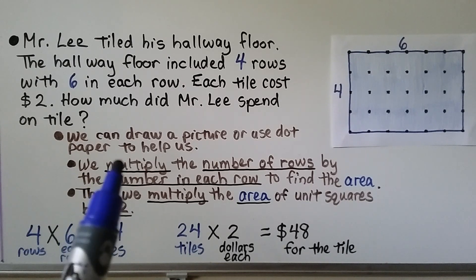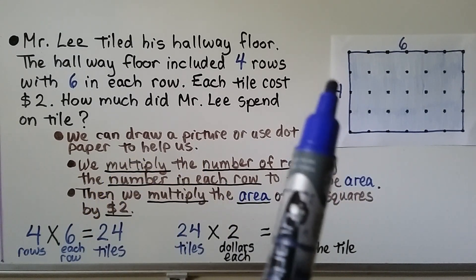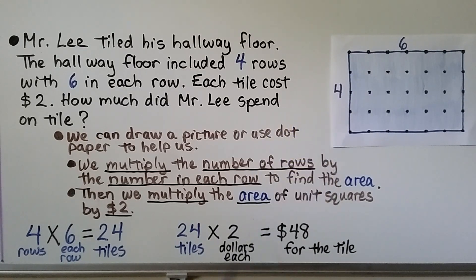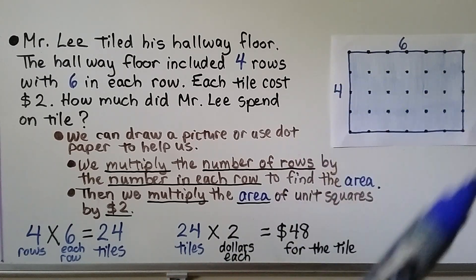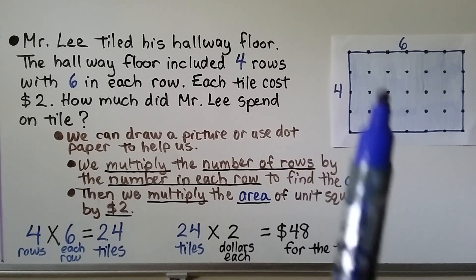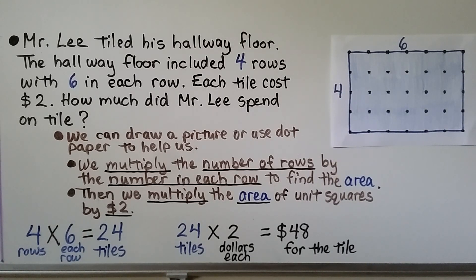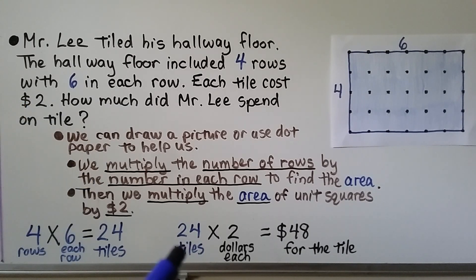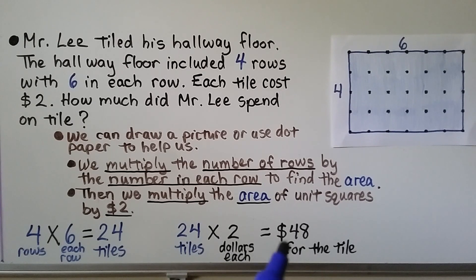We can draw a picture or use dot paper to help. There were four rows and six tiles in each row. We multiply the number of rows by the number in each row to find the area: 4 rows times 6 in each row equals 24 tiles. Then we multiply the area of 24 unit squares by the two dollars each tile costs: 24 tiles times $2 equals $48. So Mr. Lee spent $48 for the tile.